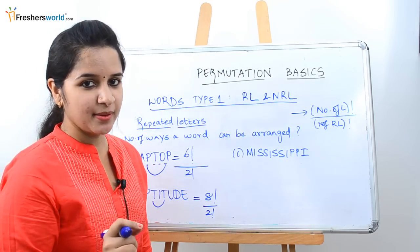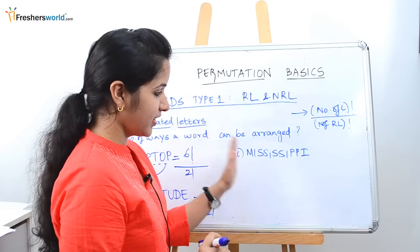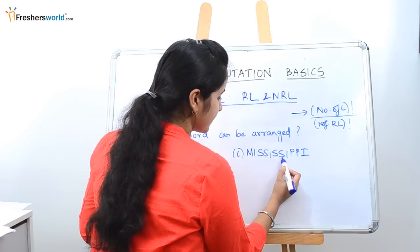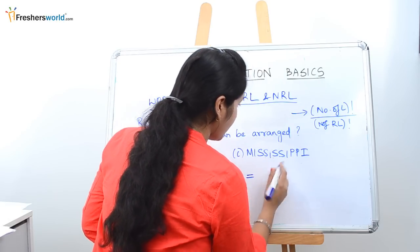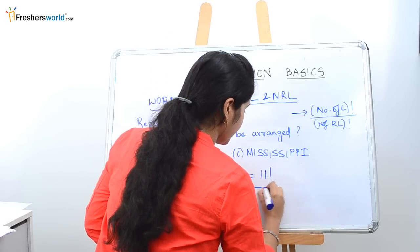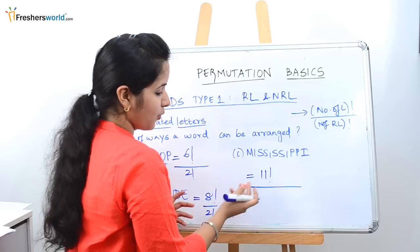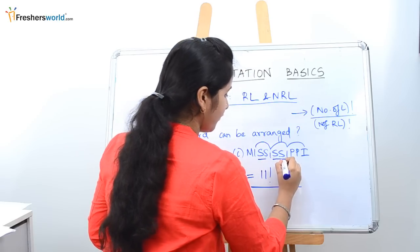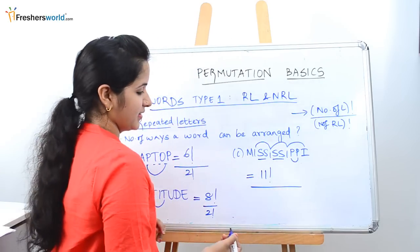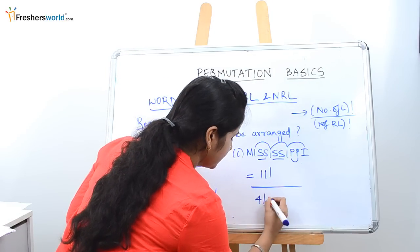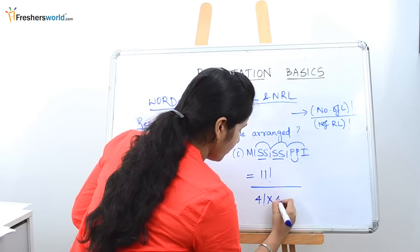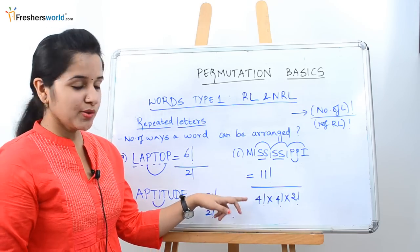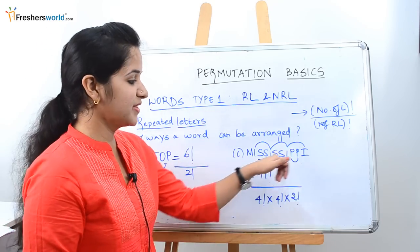Let's take a tougher example to understand the concept better. The word given is MISSISSIPPI. Counting the letters gives eleven. As per the formula, we take eleven factorial divided by the repeated letters. I is repeated four times, S is also repeated four times, and P is repeated twice. So the answer is eleven factorial divided by four factorial times four factorial times two factorial. Once you solve this, you get the number of ways the word MISSISSIPPI can be arranged.